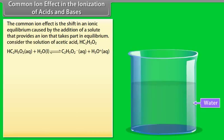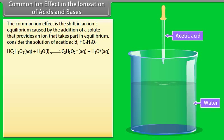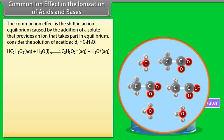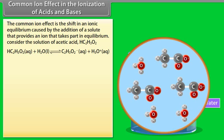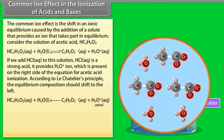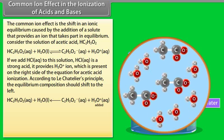Common ion effect in the ionization of acids and bases: The common ion effect is the shift in an ionic equilibrium caused by the addition of a solute that provides an ion that takes part in the equilibrium. Consider a solution of acetic acid, HC₂H₃O₂. If we add HCl(aq) to this solution — HCl is a strong acid — it provides H₃O⁺ ions.